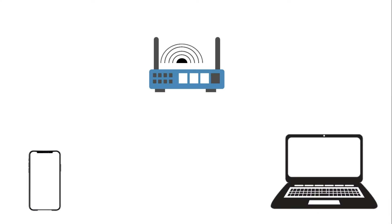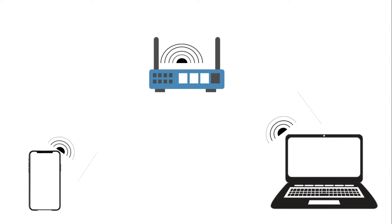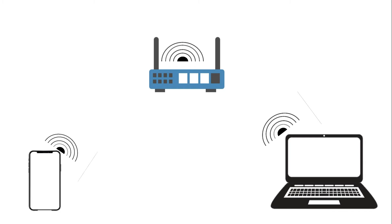What is a wireless network? A wireless network is a network that uses radio waves to link computers and other devices together. The implementation is done at Layer 1, the physical layer, of the OSI model.